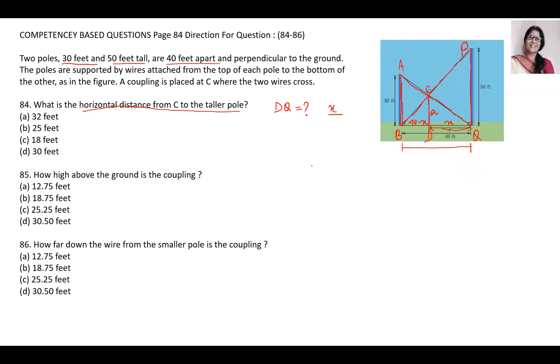First I will take triangle ACD, which is similar to triangle ABQ. Angle D is 90 degrees. By AA similarity, we can write the ratio of sides are proportional. So CD upon AB is equal to DQ upon BQ. CD upon AB, AB is 30. DQ is x, and BQ is 40. So this is our equation one.